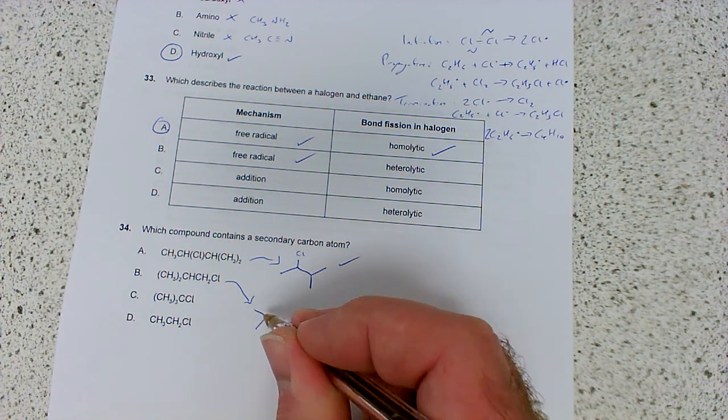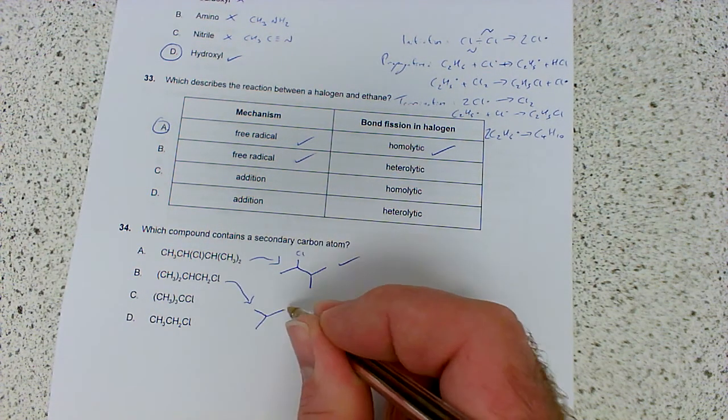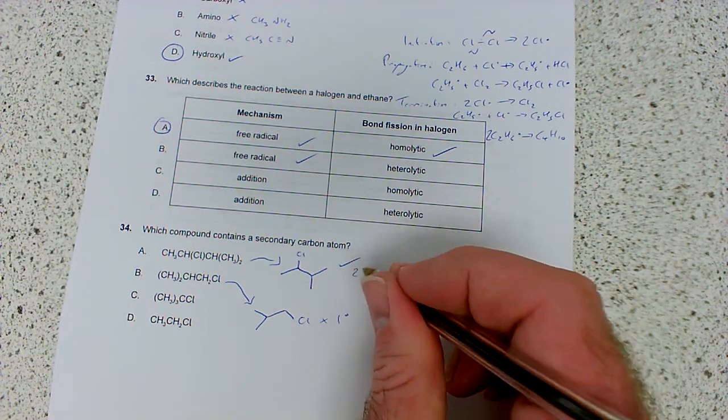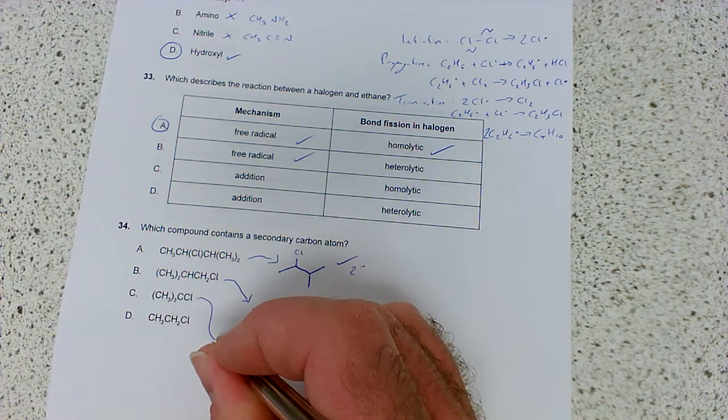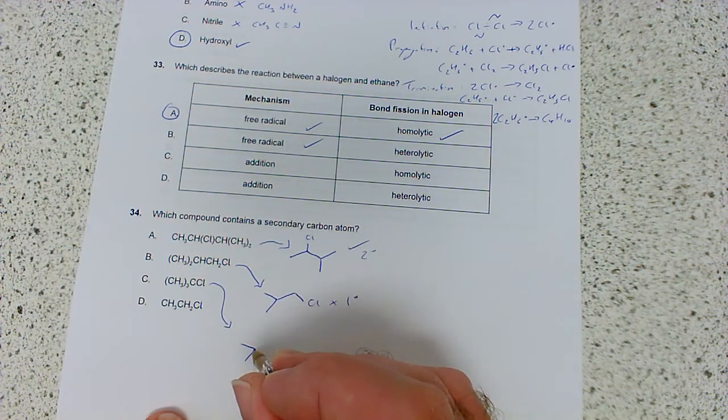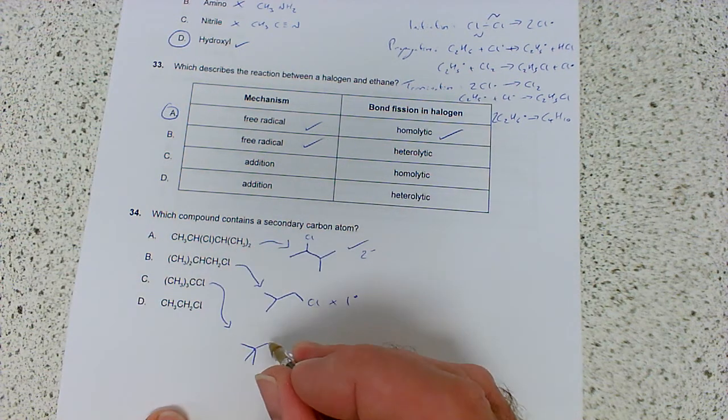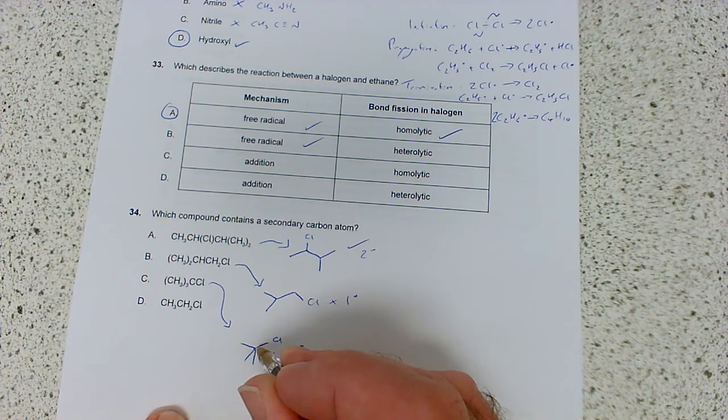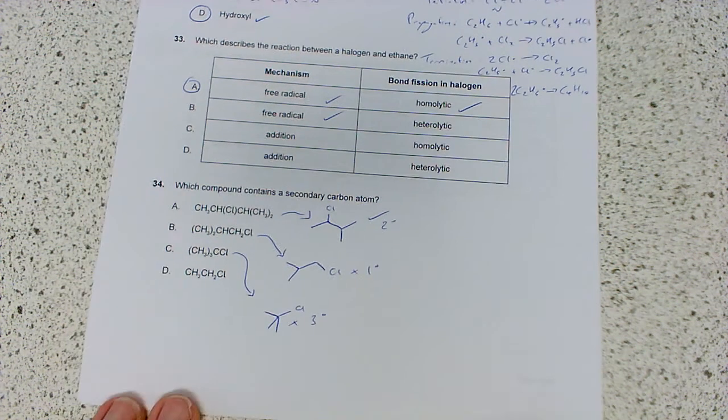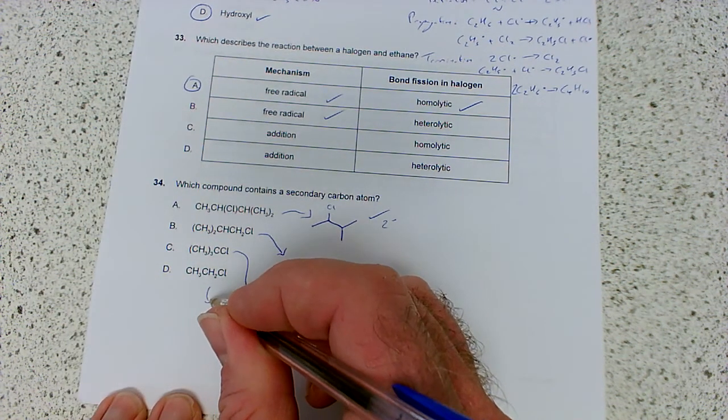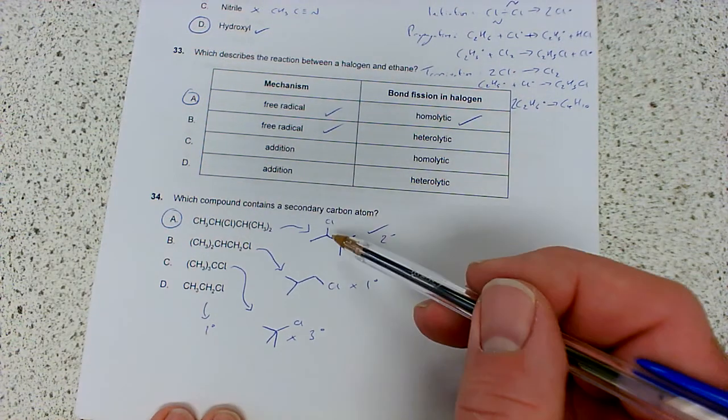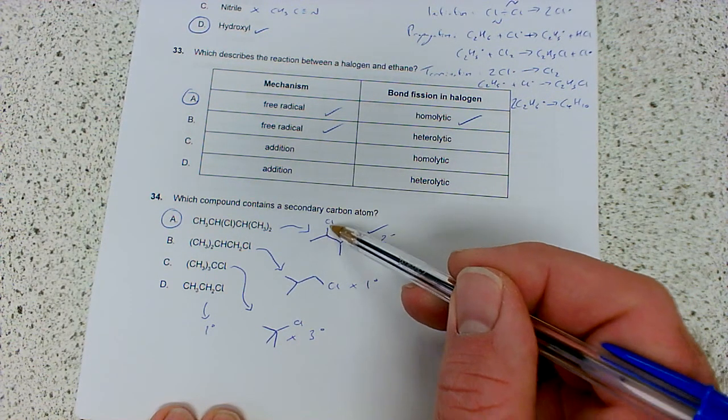Let's check the others. Here we've got two methyl groups and then chlorine - that's primary. This one has three methyl groups attached to the carbon with chlorine - that's tertiary. This last one is also primary. So it's the first one, answer A.